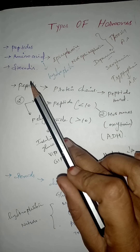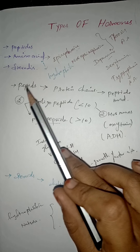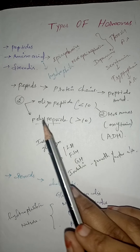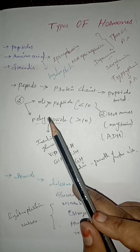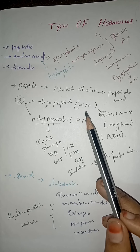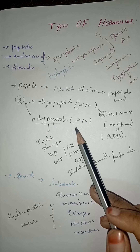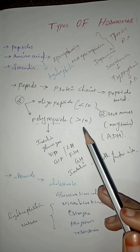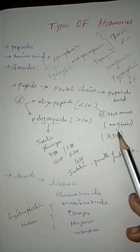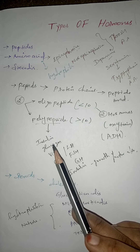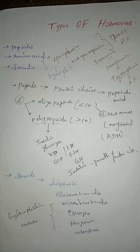To summarize, there are three types of hormones: peptide hormones, amino acid hormones, and steroid hormones. Peptide hormones contain peptide bonds and have two subtypes — oligopeptide, with less than 10 peptide bonds, and polypeptide, with greater than 10. Oligopeptide hormones include oxytocin and antidiuretic hormone, while polypeptide hormones include insulin, glucagon, LH, and FSH.